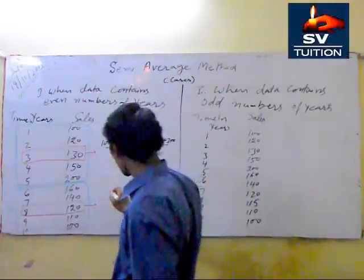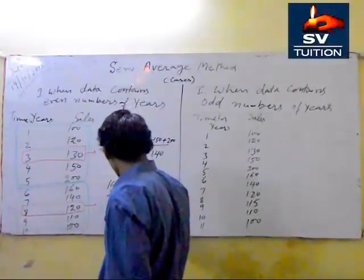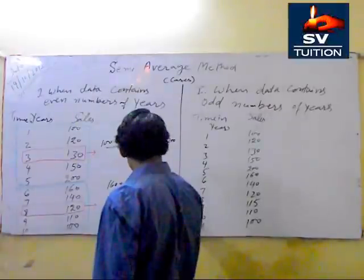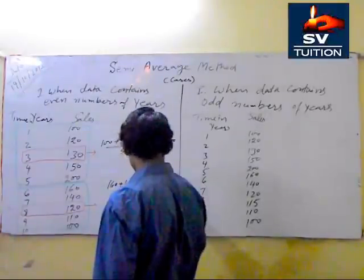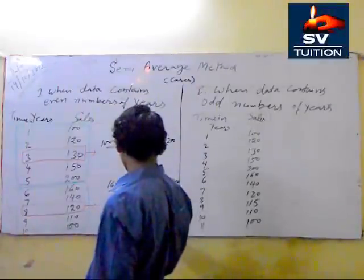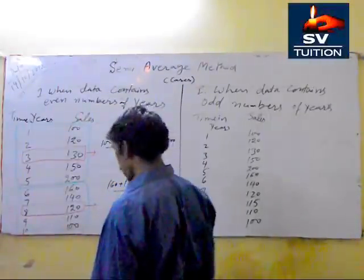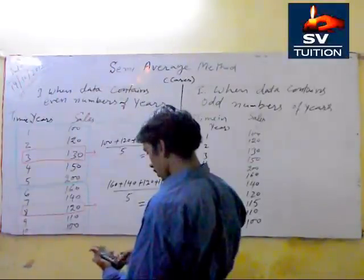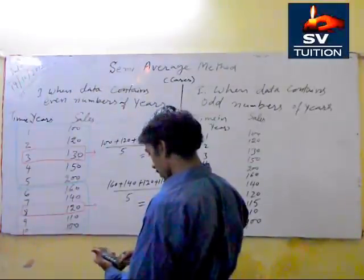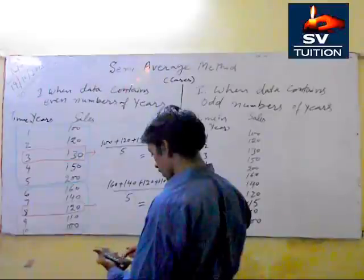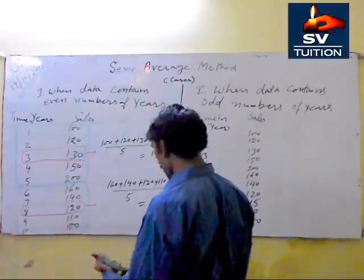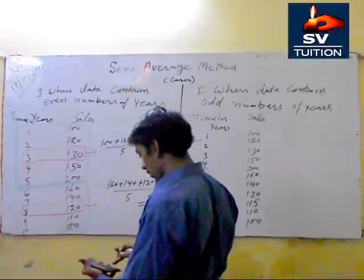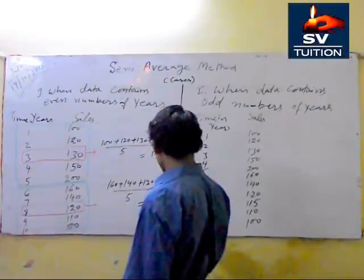And now we take the average of this. 160, 140, 120, 110 plus 100 divided by 5. And is equal to 160 plus 140 plus 120 plus 120. This is 630 divided by 5, 126.